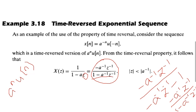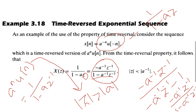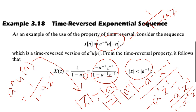We know the Z-transform of a^n · u(n) is 1 divided by (1 − a·Z⁻¹). So for the time-reversed sequence, the Z-transform will be 1 divided by (1 − a·Z). In order to give it a proper form, we multiply and divide by minus a⁻¹·Z⁻¹. The region of convergence, which was previously |Z| > |a|, will now be the opposite: |Z| < |a⁻¹|. The greater-than sign is changed to less-than, and a is changed to a-inverse. This is the time reversal property.